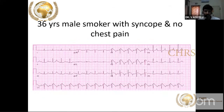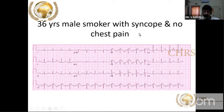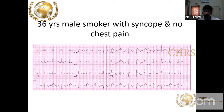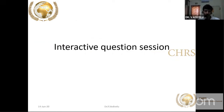A young non-smoker male with history of recurrent syncope but no chest pain. ECG shows V1 to V3 with classical coving ST segment elevation — this is Brugada syndrome. All of you should read about Brugada syndrome as it is a separate topic entirely. Brugada syndrome can present as a STEMI mimic.